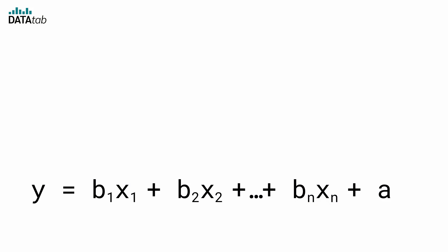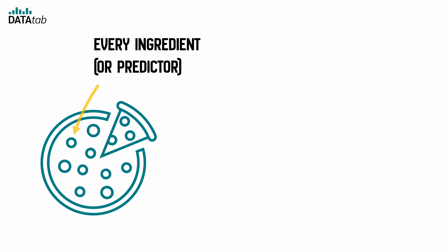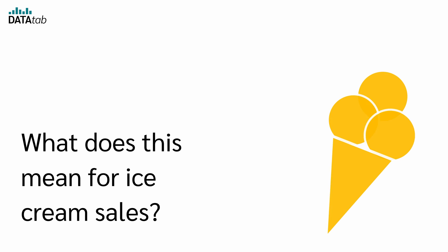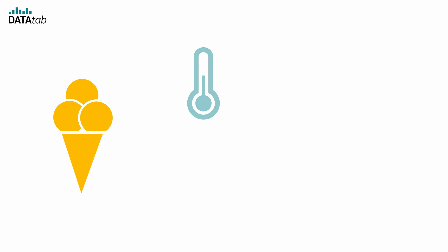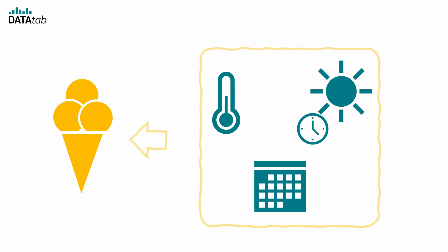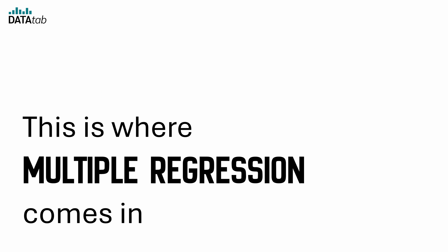Our equation also gets a makeover. Each B now represents how much each predictor influences the outcome — it's like building a pizza, where every ingredient adds something different to the final taste. What does this mean for ice cream sales? You've realized that sales aren't just influenced by the temperature outside — other things seem to be playing a role too, maybe the day of the week and the hours of sunshine. This is where multiple regression comes in — it's like having a super smart ice cream calculator.